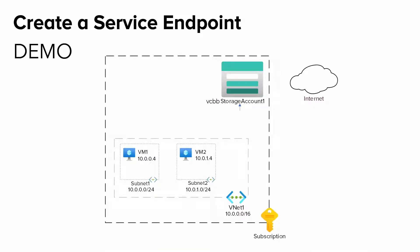Let's jump into the demo of creating service endpoints. First, let's look at the lab environment. I have an Azure subscription with one VNet, VNet1, and two subnets: subnet1 and subnet2. Subnet1 has VM1, and subnet2 has VM2. I have a storage account, VCBB Storage Account 1, which has a file share with some text files. Both VMs are accessing the files of this file share hosted in the storage account using an SMB file share mounted on these VMs. The connection is established via the internet and no service endpoints are currently being used.